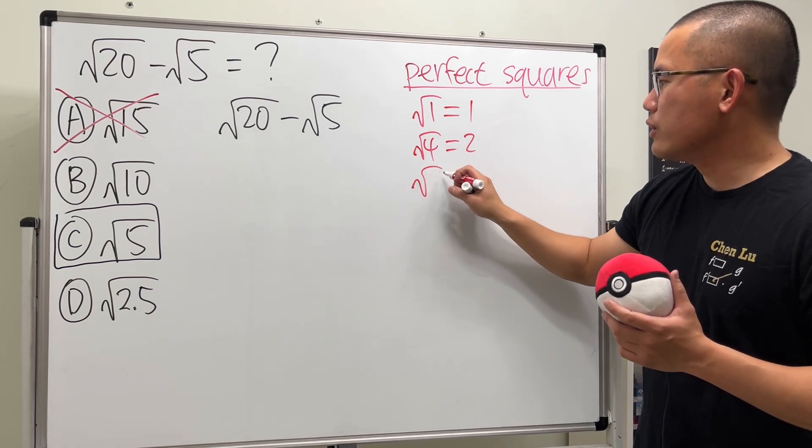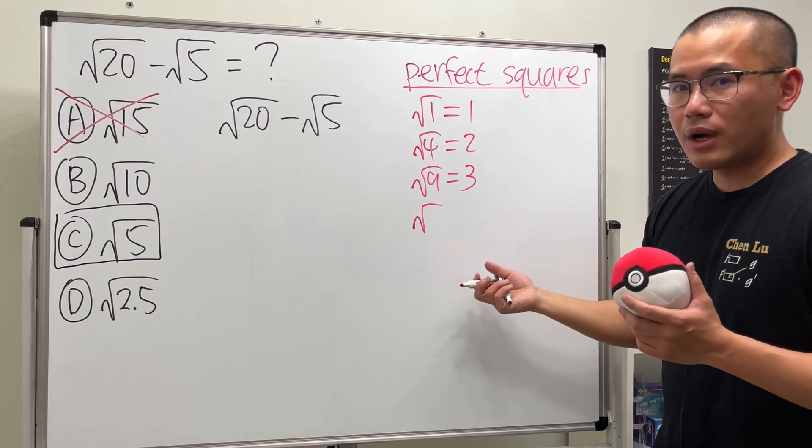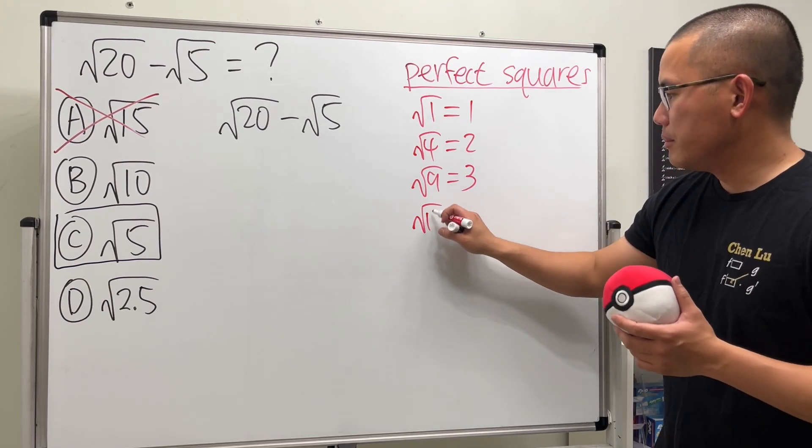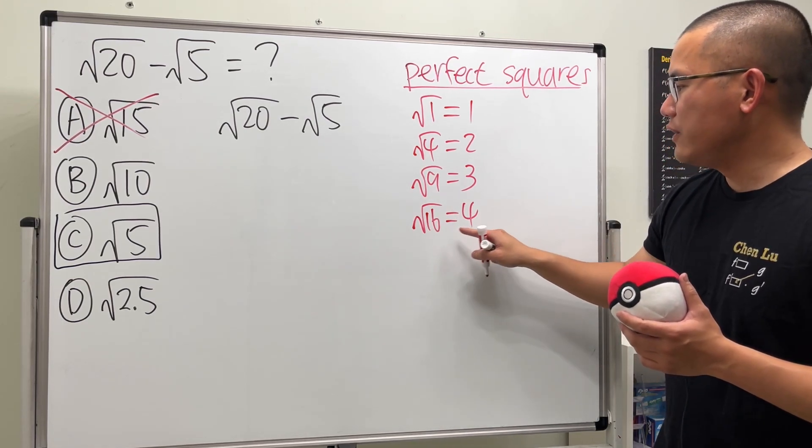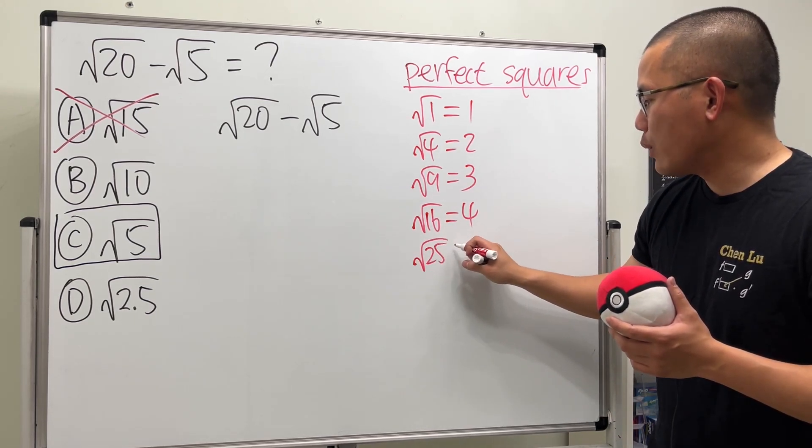And then square root of 9, it will give you 3, right? Because 3 times 3 is equal to 9. And then so on. The next number is what? 16. Because 4 times 4 will give you 16. So, yeah. And then we have square root of 25. That will give you 5.